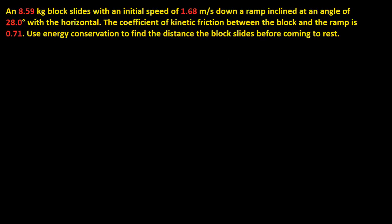We have this word problem. An 8.59 kilogram block slides with an initial speed of 1.68 meters per second down a ramp inclined at an angle of 28.0 degrees with the horizontal. The coefficient of kinetic friction between the block and the ramp is 0.71. Use energy conservation to find the distance the block slides before coming to rest.